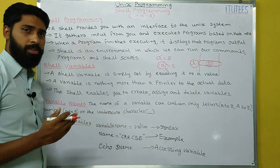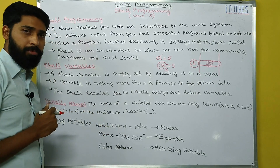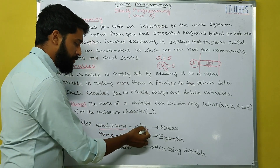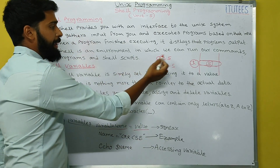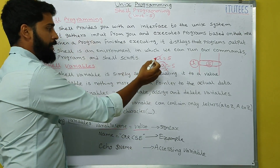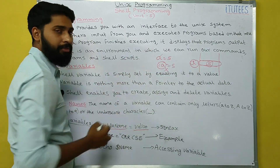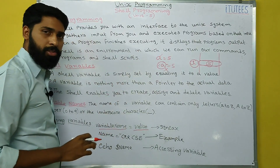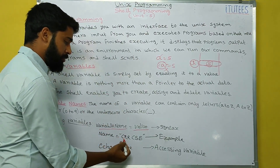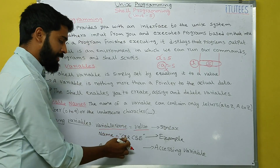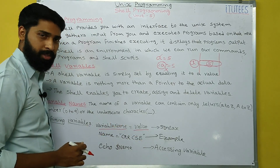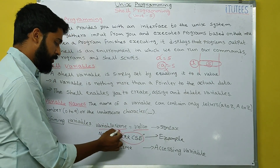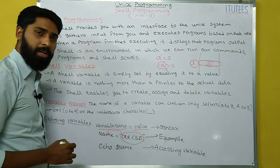Defining variables: how do we define a variable? The syntax is: variable_name equals to value. For example, a equals to 5 — the variable name is a and the value is 5. We assign the value using the equals-to symbol. For example, name equals to "CRRCSC" — CRRCSC is the value stored in the variable, and the variable name is name.